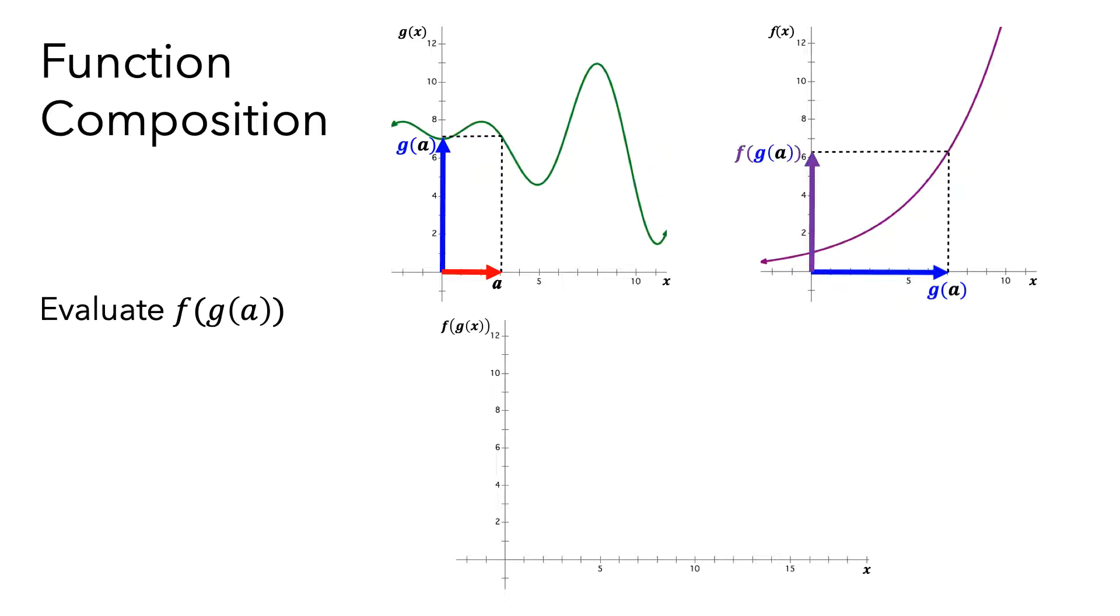So if we think about the graph of the composite function f(g(a)), if we used a as the input, then the function f would produce the corresponding output value, and we put these together to plot the coordinate on the graph.